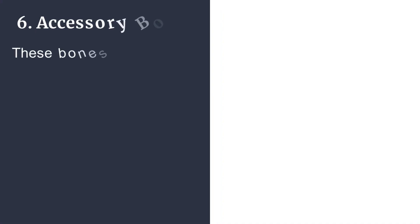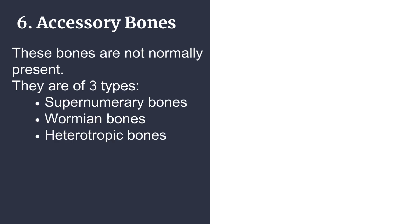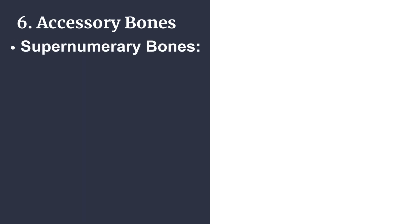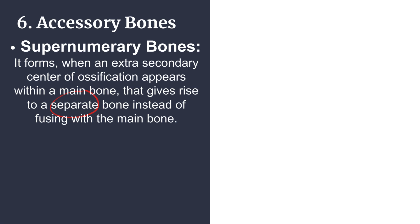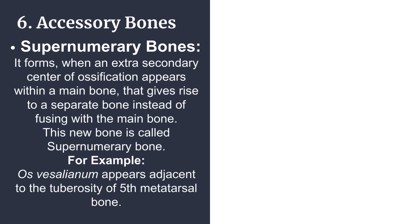The last category is accessory bones. These bones are not normally present and are of three types: supernumerary bones, wormian bones, and heterotropic bones. Supernumerary bones form when an extra secondary center of ossification appears within a main bone, giving rise to a separate bone instead of fusing with the main bone. For example, os vassalianum appears adjacent to the tuberosity of the fifth metatarsal bone.